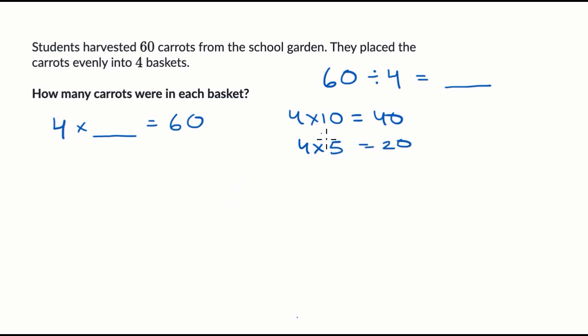So if we add 4 times 10 plus 4 times 5, that's the same thing as 40 plus 20. So that's going to be equal to 60.